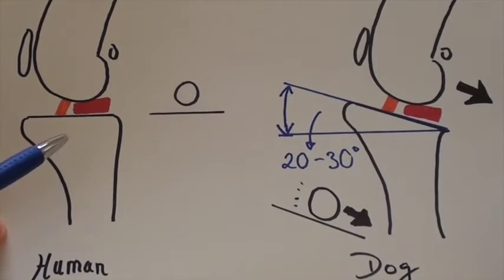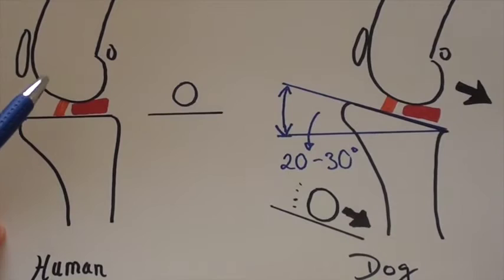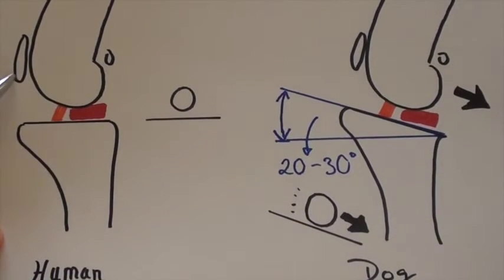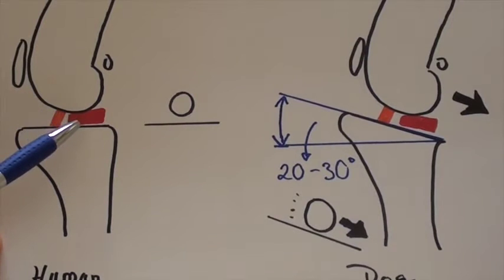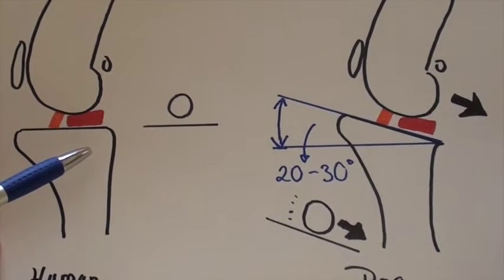If we look at the human knee, we have the same bones between both species: femur, tibia, kneecap, and inside the knee, the cranial cruciate ligament and the cushions of cartilage called the menisci.